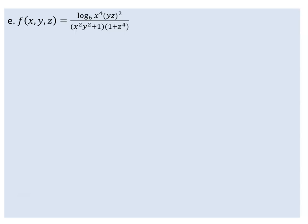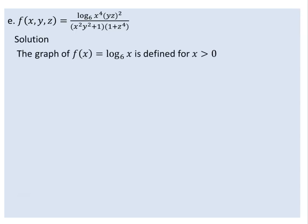For the logarithm of any variable to base 6 to be defined, the argument must be a positive real number. So x to the power of 4 times yz whole squared must be greater than 0.